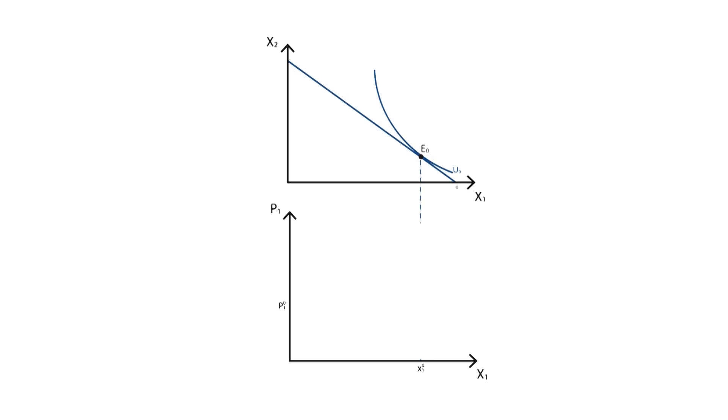At this point, the consumer chooses to buy an initial quantity of good x1 at the initial price. This point corresponds to the point where the Marshallian and Hicksian demand curves meet.